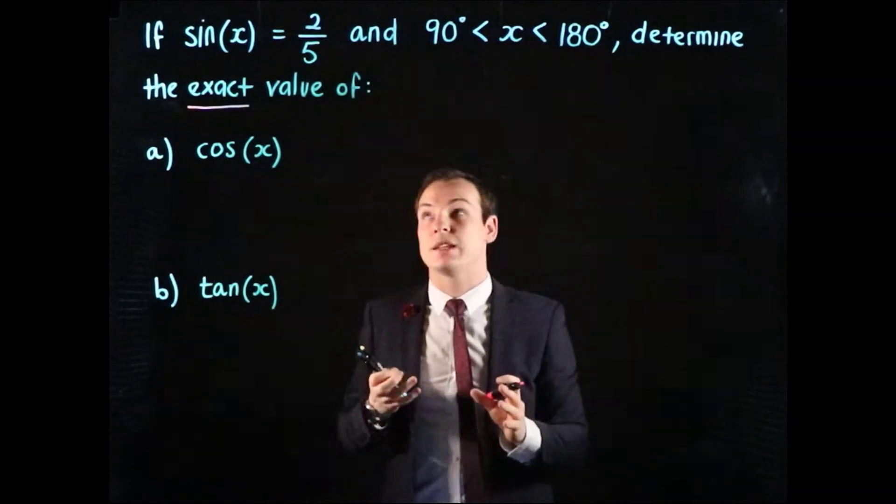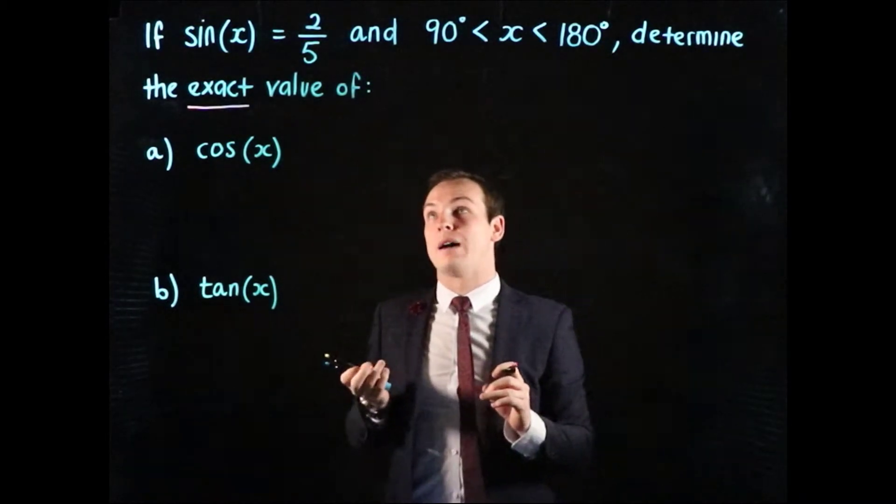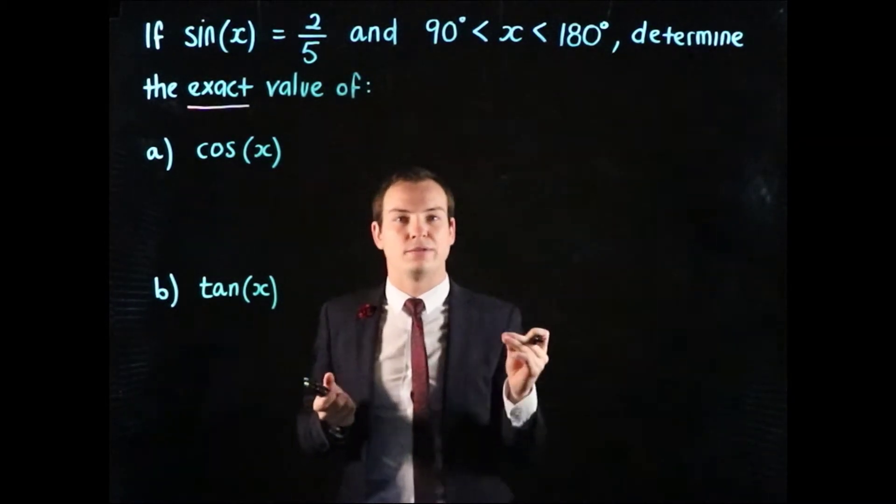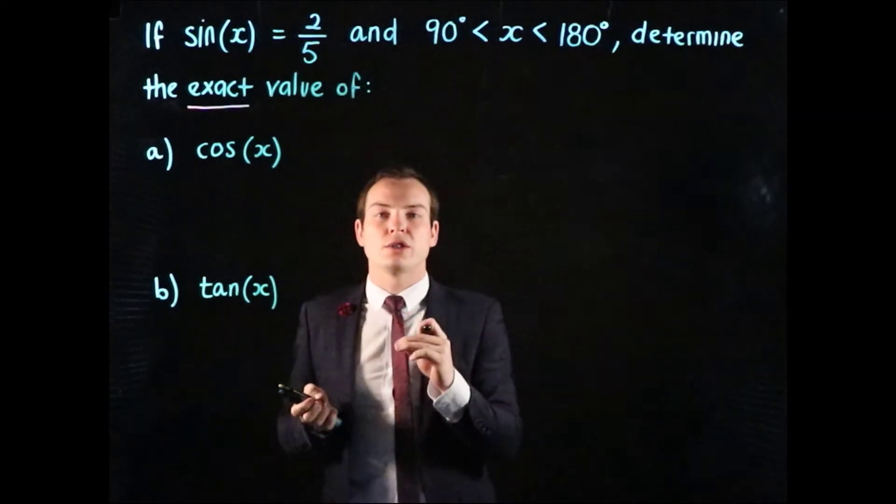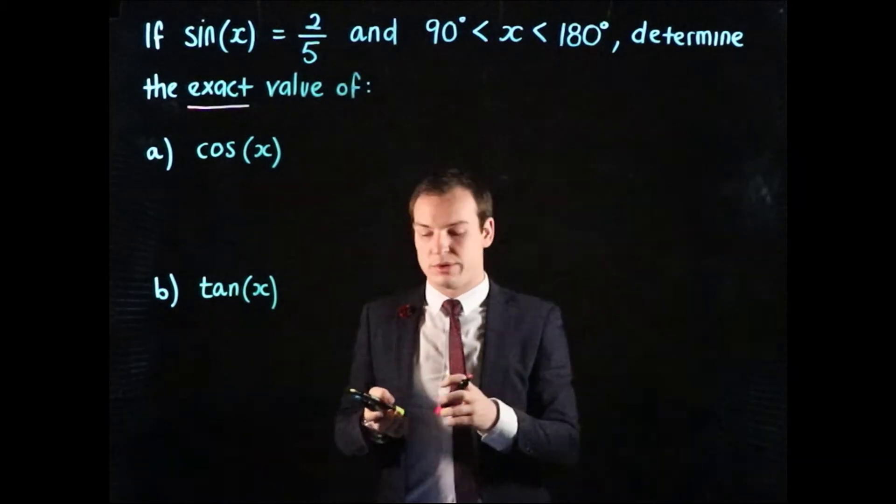When we're given a problem like this and we don't know the exact value of 2 on 5 off by heart, we're going to represent the information using some form of diagram.